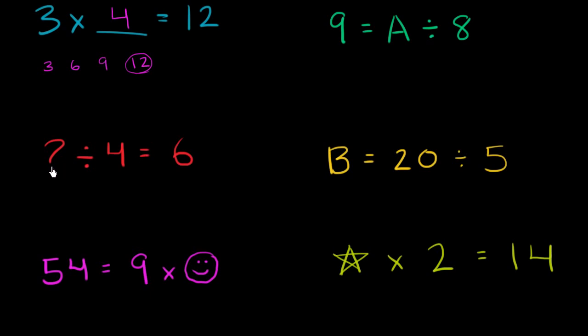Now let's work on this one. Something divided by, so question mark divided by 4 is equal to 6. Well, this is the same thing as saying that question mark is equal to 4 times 6, or you could say 6 times 4. They're the same. Is equal to 6 times 4, which is the same thing as 4 times 6.